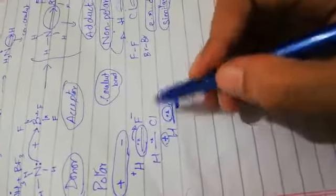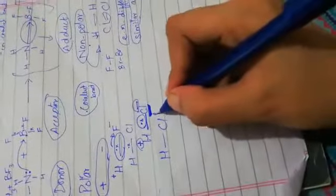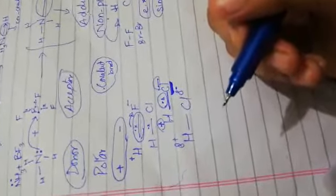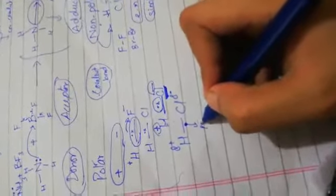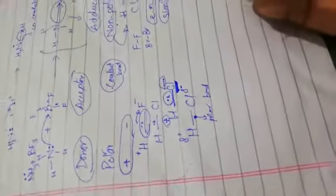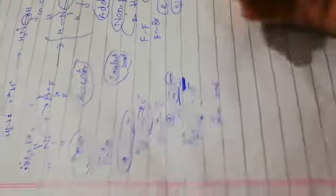Similarly, in HCl, a bond forms between hydrogen and chlorine, but due to the electronegativity difference, electrons are pulled more toward chlorine. The side toward which electrons shift gains a partial negative charge, and the other side gains a partial positive charge. This type of bond is called a polar covalent bond. Important exam questions include: why a bond becomes polar, the difference between non-polar and polar covalent bonds, and how you can identify whether a bond is polar.